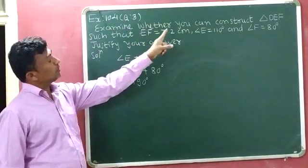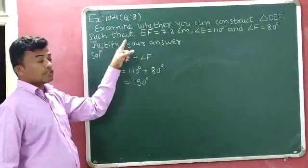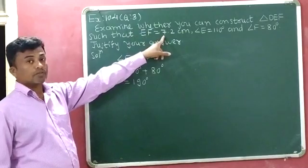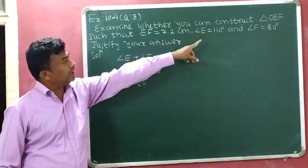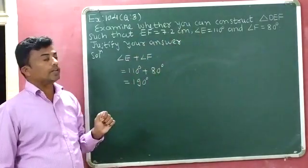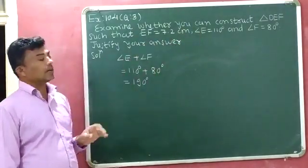Examine whether you can construct triangle DEF such that EF is equal to 7.2 cm, angle E is equal to 110 degrees, and angle F is equal to 80 degrees. Justify your answer.